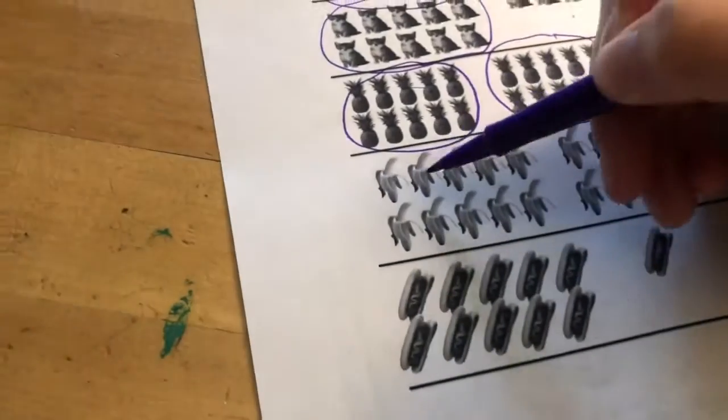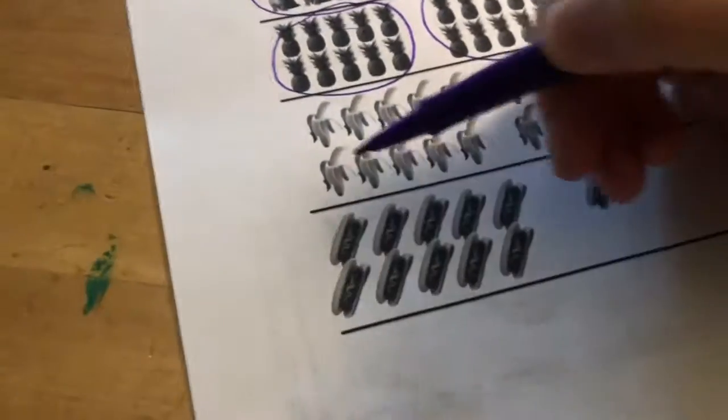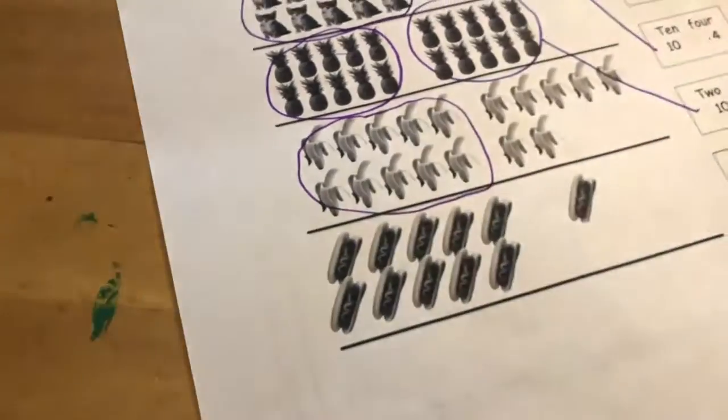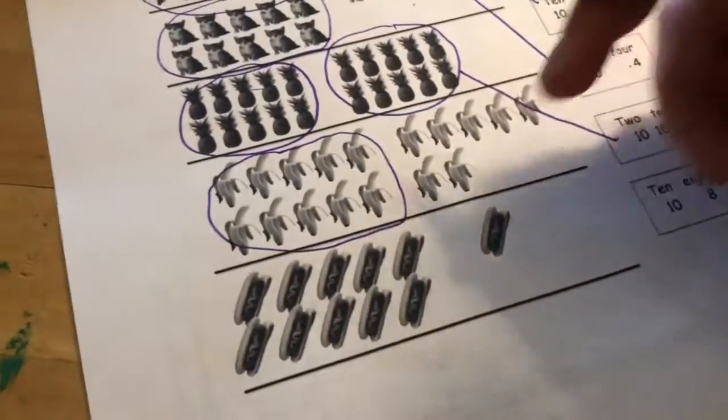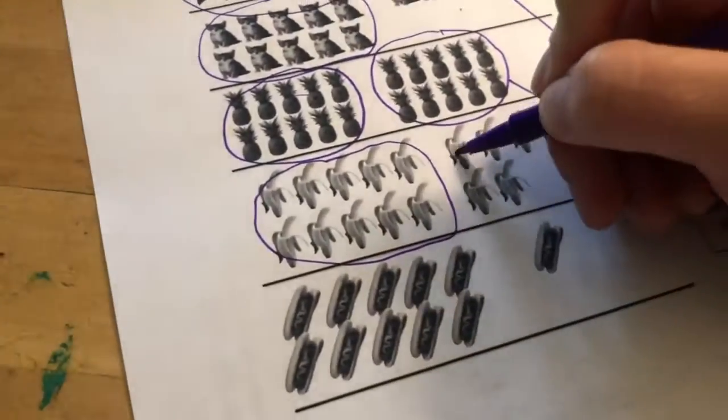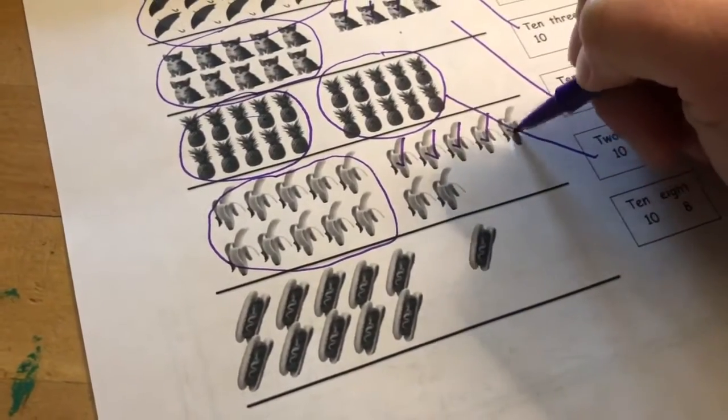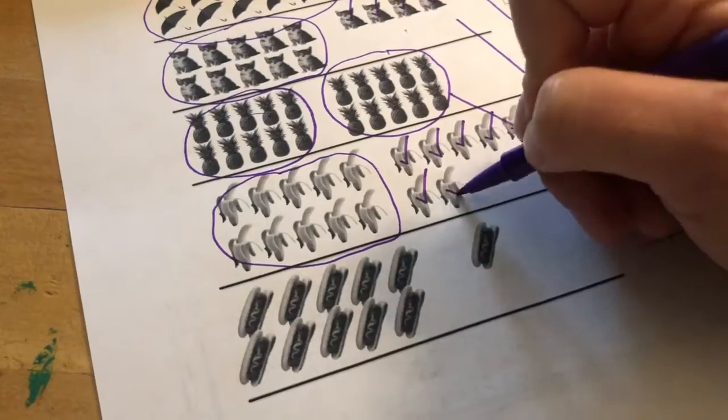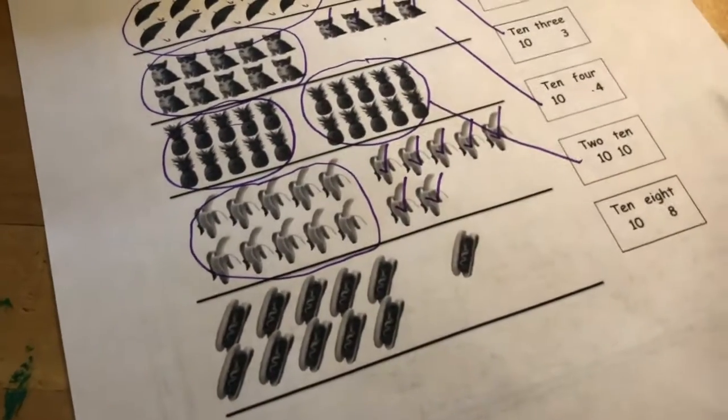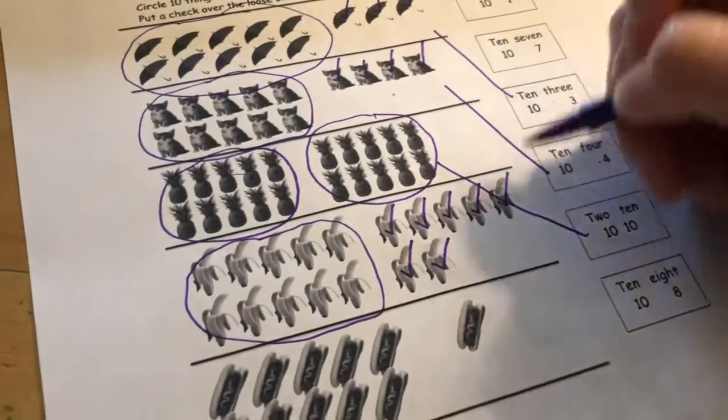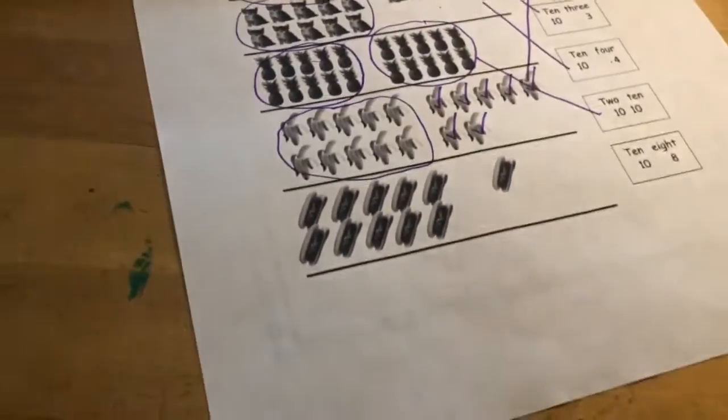Okay, if we look at the bananas, 1, 2, 3, 4, 5, 6, 7, 8, 9, 10. So I'm going to circle that group of 10, and let's use the say 10 way to count our loose ones over here. So 10, 10-1, 10-2, 10-3, 10-4, 10-5, 10-6, 10-7. And 10-7 is the same as what teen number? 17, exactly right. So I'm going to look up here, it says 10-7. I'm going to draw a line to match.